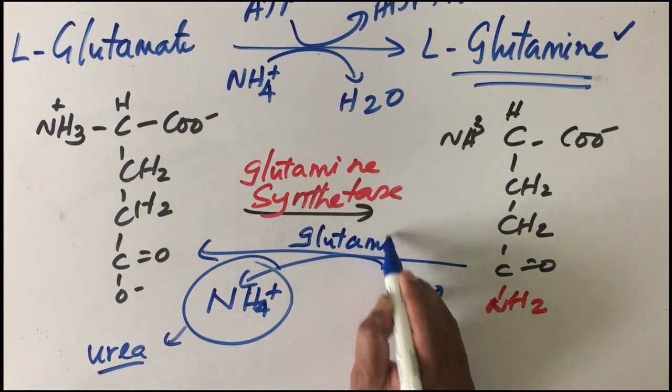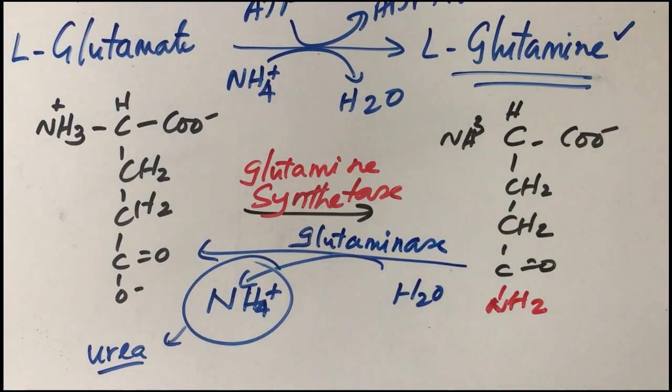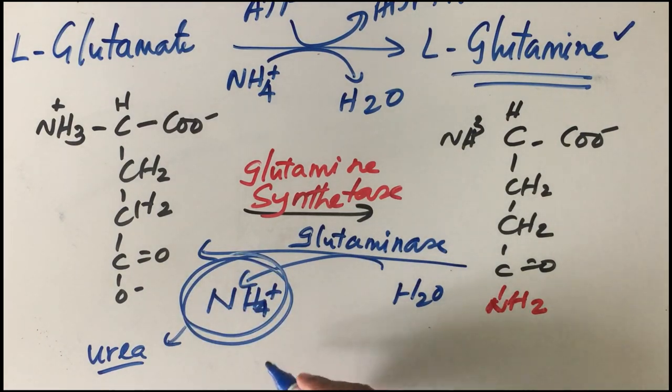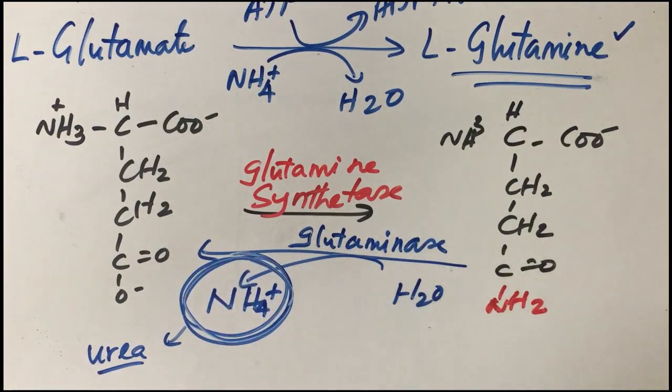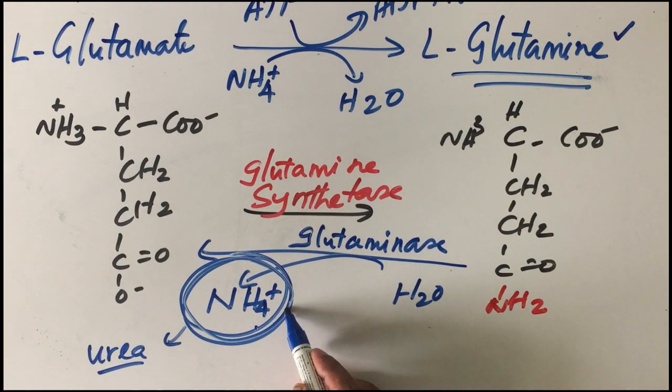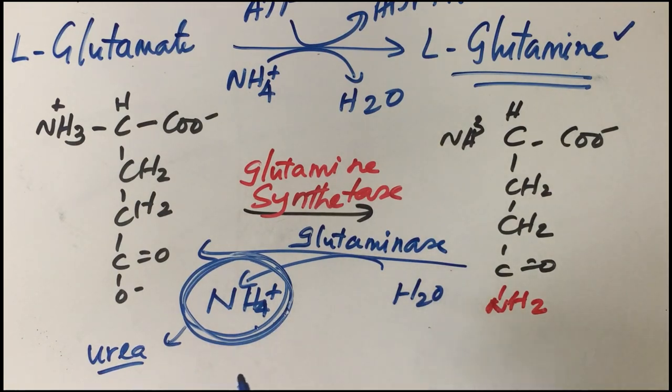Glutaminase is highly active in the kidney because ammonia acts as a buffer, especially during acidosis. Ammonia is produced and can be excreted. In the liver, glutaminase makes ammonia available for conversion to urea and excretion. This is one way ammonia is transported.